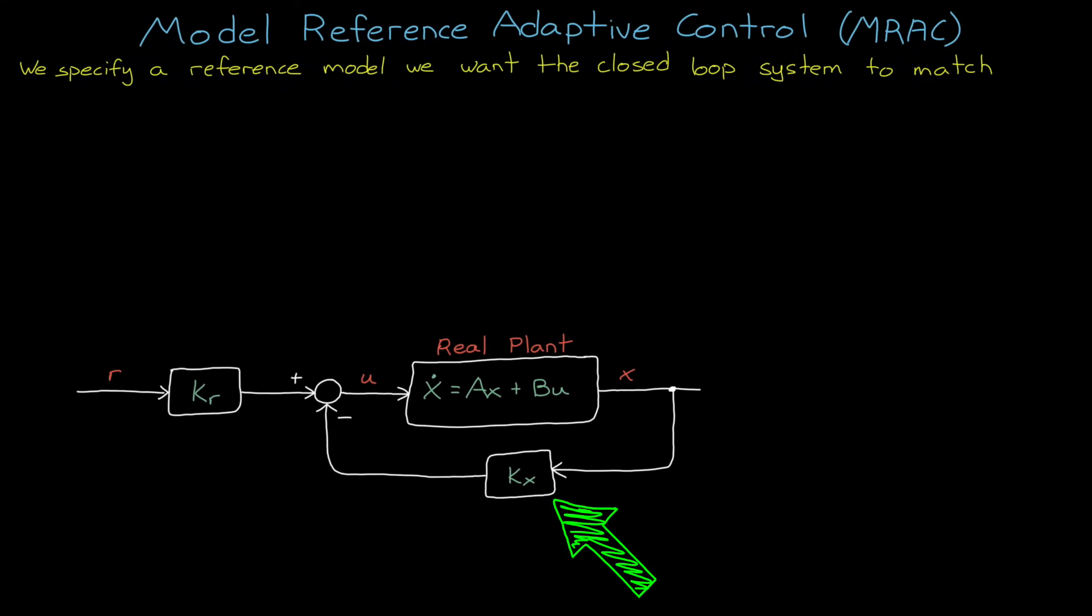We have the feedback gains KX, and we have the feed forward gains KR. So the idea is that we want to tune these gains to generate the performance we're looking for in this closed loop system. Now, what performance are we looking for? Well, we could define performance in terms of things like rise time, overshoot, and settling time to a step input.